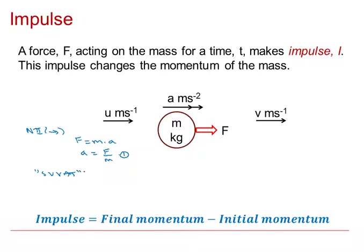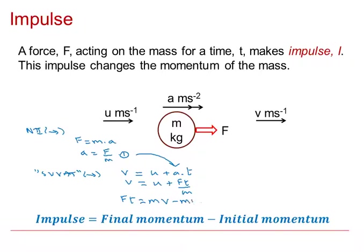taking right as positive, we use V equals U plus AT. So final velocity V equals initial velocity U plus acceleration A times time T. Eliminating A using equation 1, we get V equals U plus FT over M. Rearranging for FT gives FT equals MV minus MU.